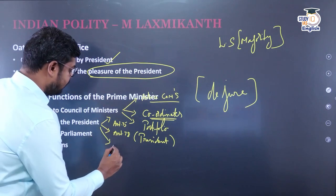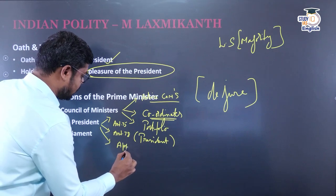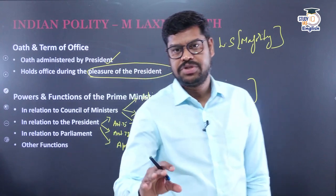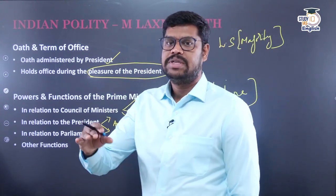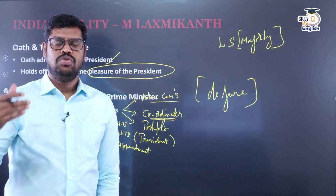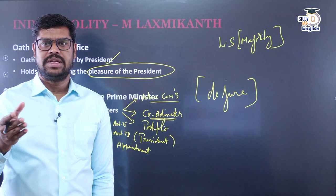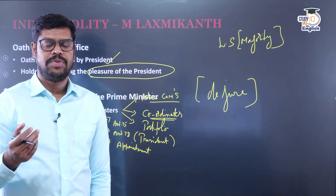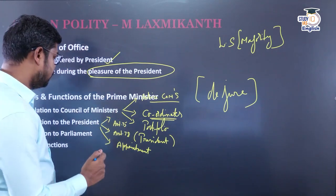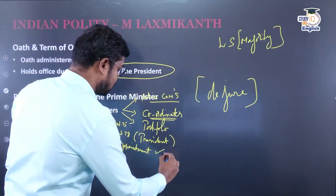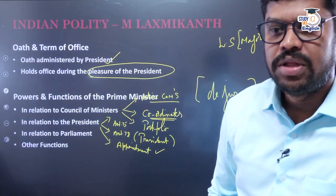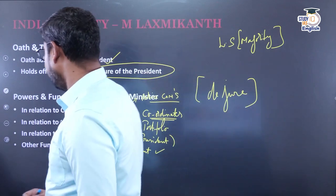Although the President is not a real executive, he should be aware of what is happening in the government and is entitled to know under Article 78. Apart from that, various important appointments — such as the CAG, the Election Commission of India, the Finance Commission, and national commissions for Scheduled Castes and Scheduled Tribes — are all done by the President but majorly on the advice of the Prime Minister.